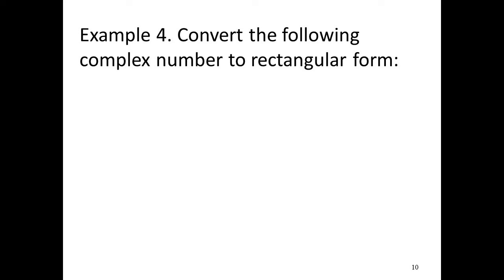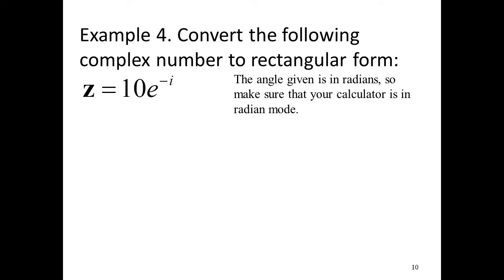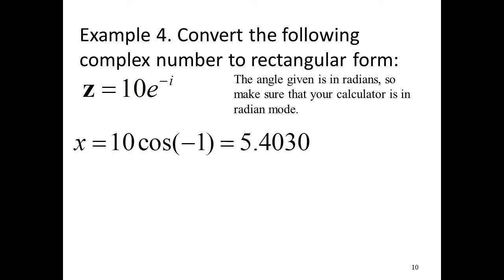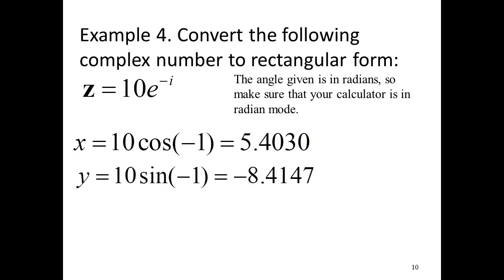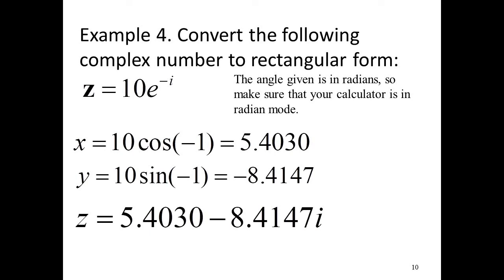Example 4: Convert the following complex number to rectangular form: z equals 10e raised to negative i. The angle is in radians, so make sure your calculator is in radian mode. Using a calculator, x equals 10 times cosine of negative 1 radian, which is 5.4030, and y equals 10 times sine of negative 1 radian, which is negative 8.4147. So in rectangular form, z equals 5.4030 minus 8.4147i.